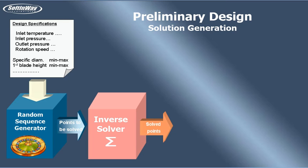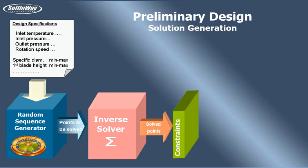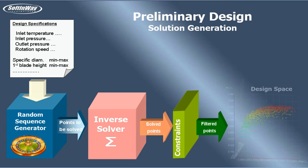As design parameter values vary from point to point, efficiency will also vary for each point. Not every generated point can be solved, as its input values may bring non-physical solutions or do not fit the embedded inverse solver empirics. Solved points, named solutions, can be filtered with specified constraints. Solutions that pass constraints successfully are stored in the design space.